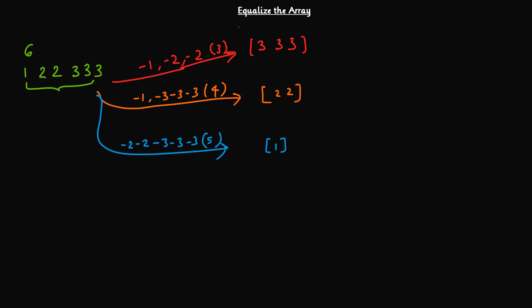Now we have to find the minimum number of deletions. In the first case we deleted 3 elements, in the second we deleted 4, and in the third we deleted 5 elements to reach the final state. Our task is to identify the minimum number of deletions required such that all elements present inside the array after deletion are the same. So among 3, 4, and 5, the minimum number of deletions required is 3. So in our case the answer will be 3 — we have to delete at least 3 elements such that all remaining elements are the same.